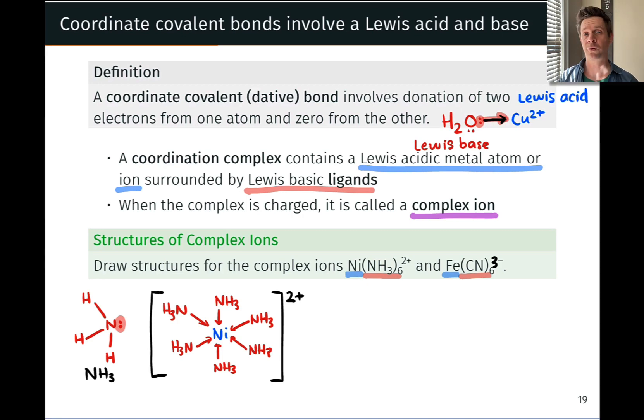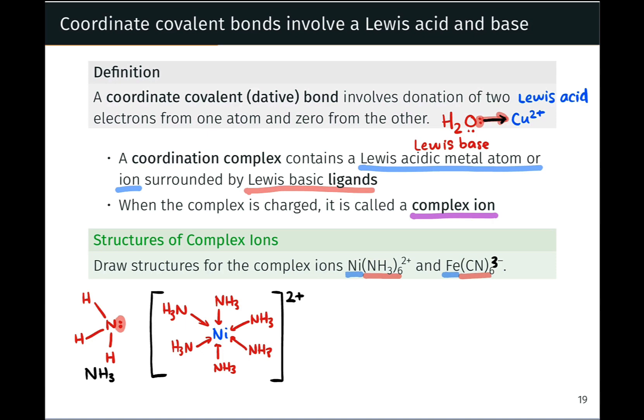There's no need to worry about formal charge inside the square brackets. We'll learn shortly how to elucidate the oxidation state of the central metal atom based on the overall charge and the charge of the ligands. But within the square brackets, there's no need to indicate, for example, +2 on the nickel center, since the actual distribution of charge may be very different. For example, the nitrogen atoms may be sharing some of the positive charge.